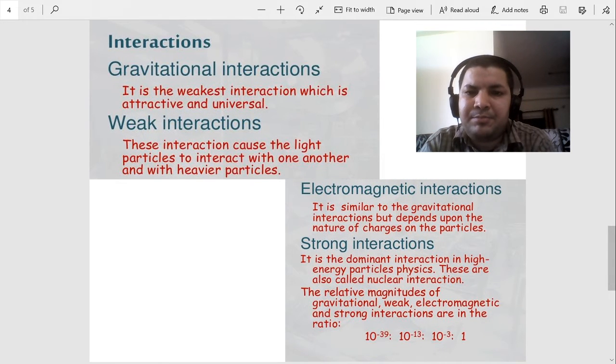The interactions. There are four main interactions in elementary particles. First one is gravitational interaction. It is the weakest interaction, which is attractive and universal.